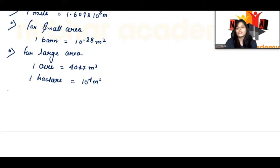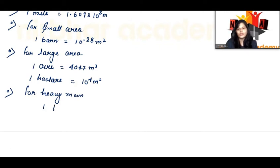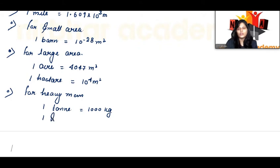For heavy mass, you can take 1 ton. 1 ton is equal to 1000 kg.